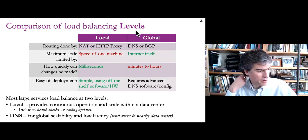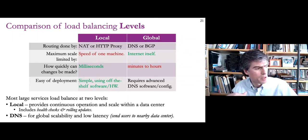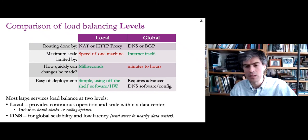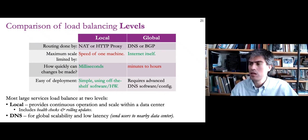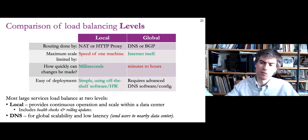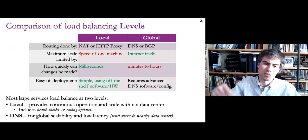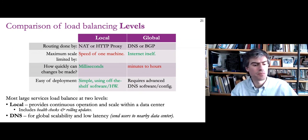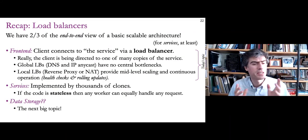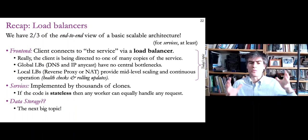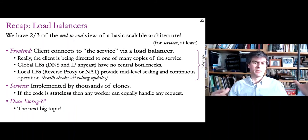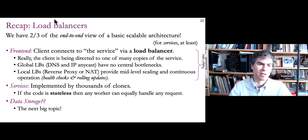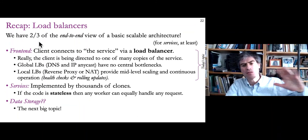Even as an entry-level user you can benefit from global load balancing by using a CDN. For example, a website can use a CDN for feeds, homepage, images, and other content by setting cache control headers in the origin server and configuring a DNS domain name to point to the CDN, which then points to the origin. That can be done in a couple of hours. Today's lecture on load balancers covers about two thirds of what's needed to understand basic scalable architectures. At the front end, clients connect through load balancers to one of many copies of a service.